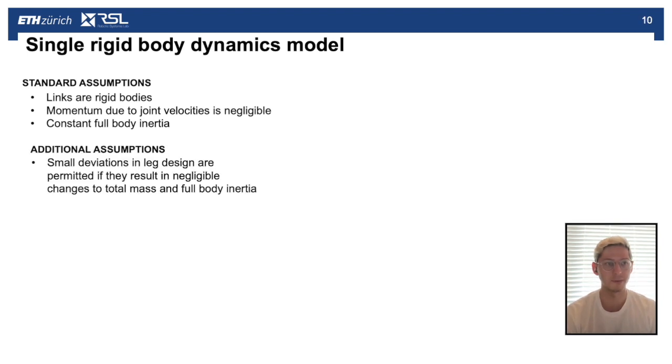We also assume that small deviations in leg design are permitted if they result in negligible changes to total mass and full body inertia. This is because we don't regenerate a new trajectory as we change the design. We have to allow some small deviations from this nominal design and assume that that trajectory is still valid for our new design, which could have a slightly different mass and inertia.